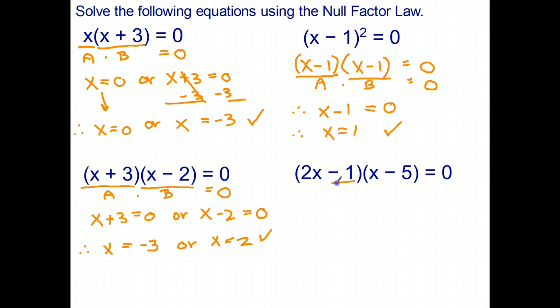Okay, the last one on this page. That's a, that's b. The null factor law says a times b is zero. My pen was playing up there, so let me make that a bit more neat. So once again, we can say either two x take one equals zero, or x take five equals zero.